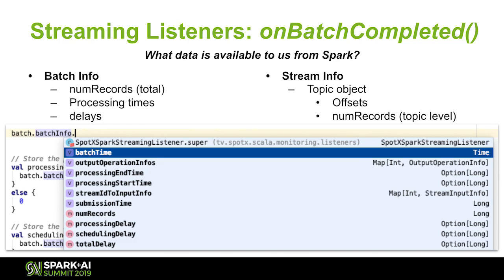We create the class, extend the listener trait from the developer API, and put whatever logic we want inside. In onBatchCompleted, we have two custom functions: one called writeBatchSchedulingStatsToInflux and another called writeBatchOffsetsAndCounts. Inside the onBatchCompleted function, you have a batch object. Inside that is a batch info map containing things like the batch time — that's the duration — information on the output, processing start and end time, submission time, how many records were processed in that batch, what scheduling delay was introduced, and total delay from previous batches combined with your own processing time.